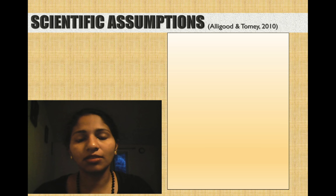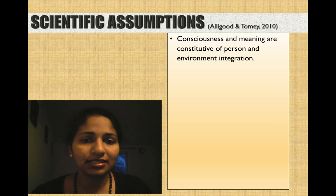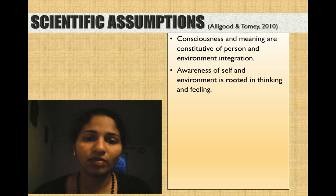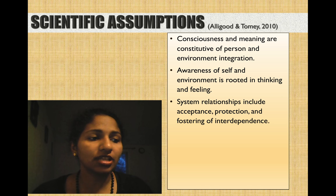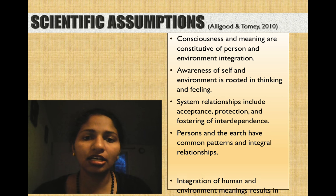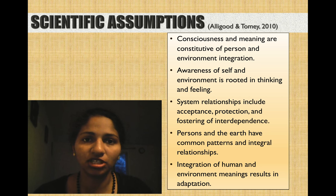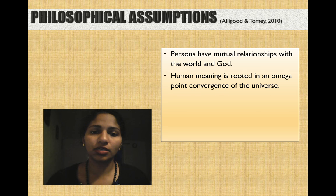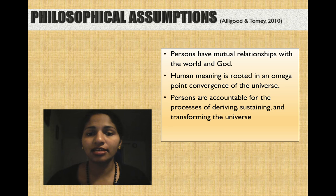Some scientific assumptions made by Roy include: consciousness and meaning are constitutive of person and environment integration; awareness of self and environment is rooted in thinking and feeling; system relationships include acceptance, protection, and fostering of interdependence; persons and the earth have common patterns and integral relationships; and integration of human and environment meanings results in adaptation. Philosophical assumptions include: persons have mutual relationships with the world and God; human meaning is rooted in omega point convergence of the universe; and persons are accountable for the process of deriving, sustaining, and transforming the universe.